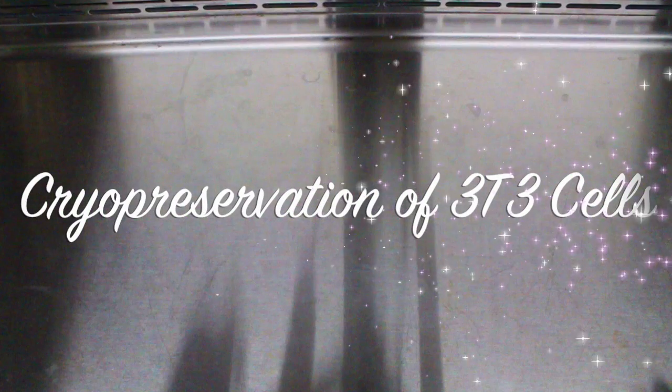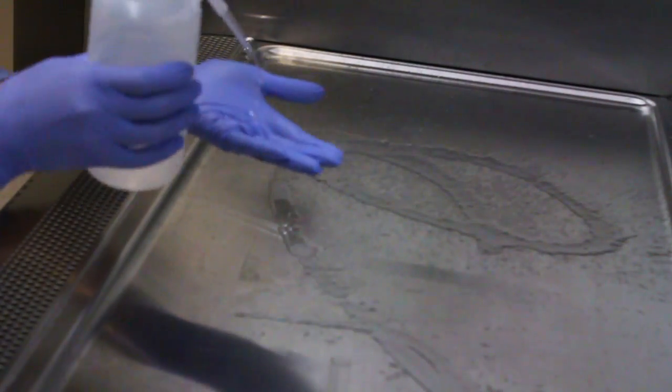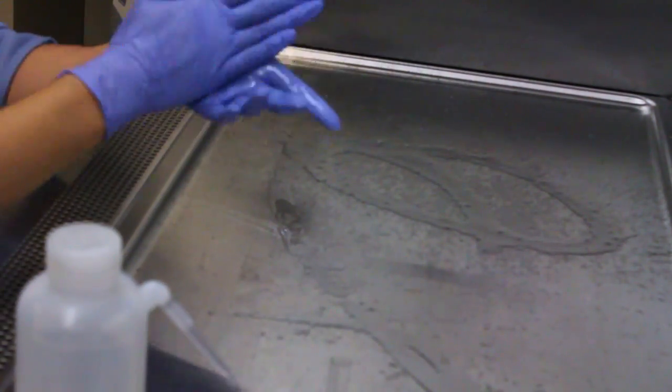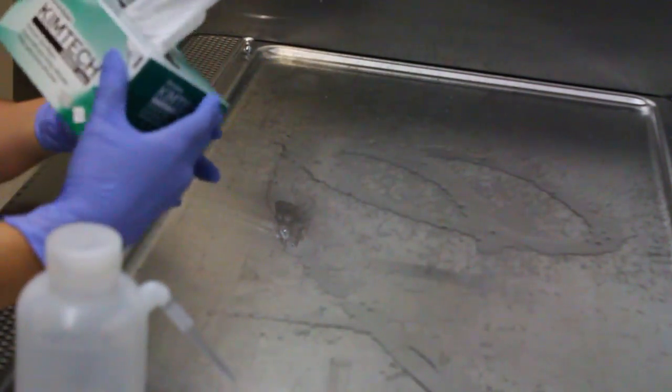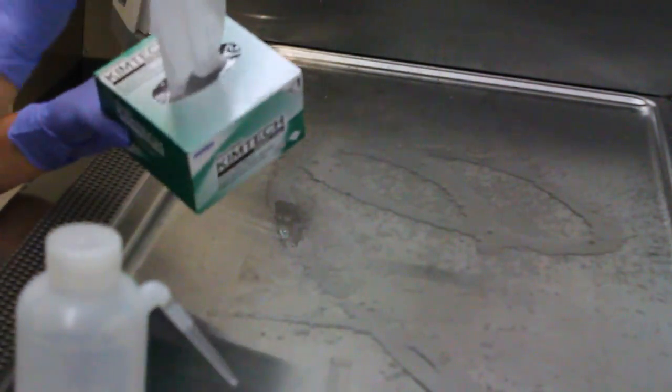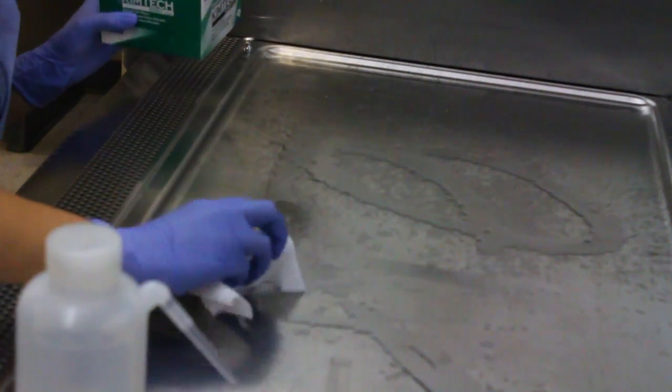Hi, today we'll be showing you cryopreservation using 3T3 cells. The first thing you always want to do is sanitize your workplace using 70% ethanol. Sanitize your gloves as well. Using Kim wipes, wipe down the entire workspace.